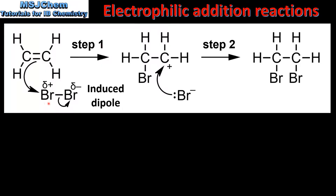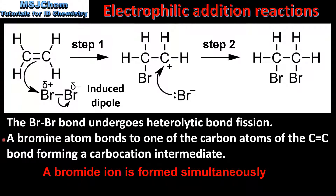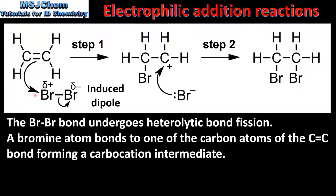The first point to note is that bromine is usually a non-polar molecule. However, when it comes close to the electron density of the carbon-to-carbon double bond, the molecule gains an induced dipole. The bromine atom nearest to the double bond gains a partial positive charge and the other bromine atom a partial negative charge. The bromine-to-bromine bond undergoes heterolytic bond fission, shown by this curly arrow which shows the movement of a pair of electrons from the bond to this bromine atom. At the same time, a bromine atom bonds to one of the carbon atoms of the carbon-to-carbon double bond, forming a carbocation intermediate. This is shown by this curly arrow which shows the movement of a pair of electrons from the pi bond of the double bond to this bromine atom. Here we can see the bond formed between the carbon and the bromine atom.